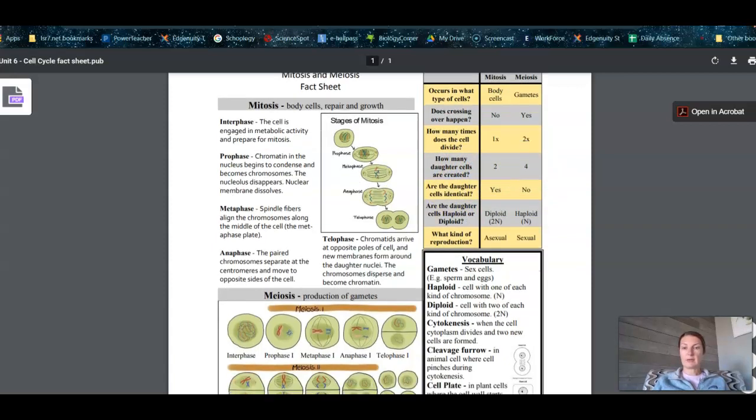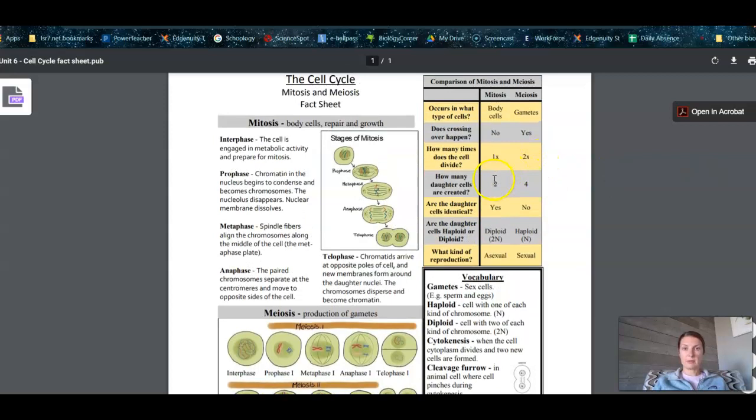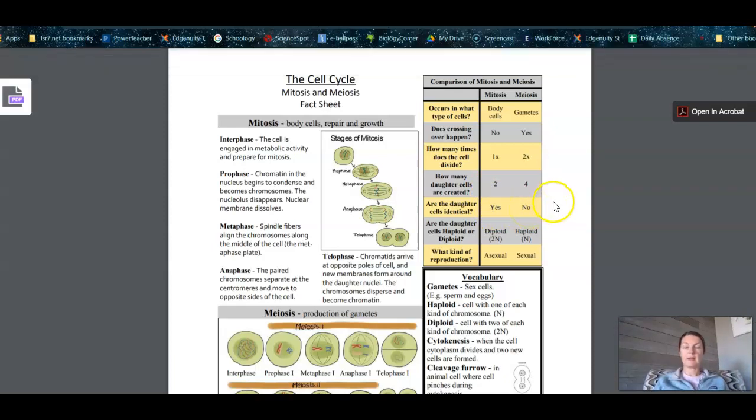And the daughter cells being identical, we say yes for mitosis and then no for meiosis. And that's why we see so many differences within populations. So if you guys can imagine, your siblings, you don't look exactly like them, and it's because of the process of meiosis with crossing over and many other things. But those cells are not identical.